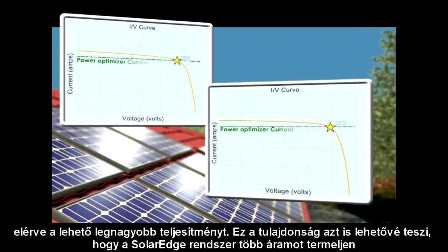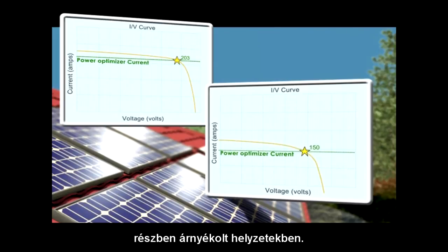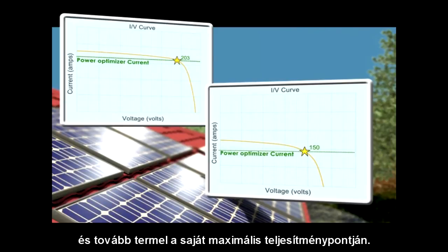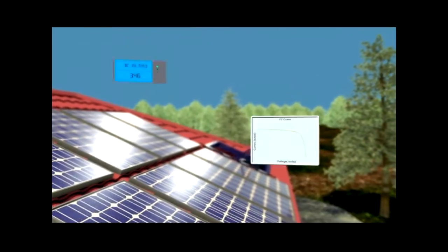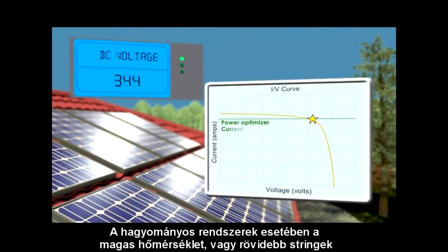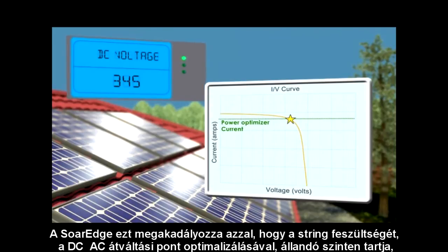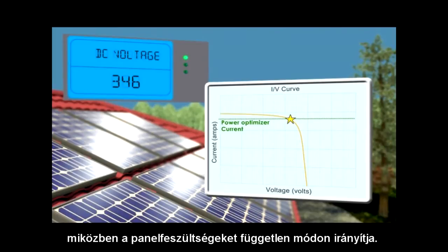This same capability also ensures the SolarEdge system will harvest more power in partial shading situations. The shaded panel produces as much as it can, while other panels in the string are not affected and continue to produce at their maximum peak point. In traditional systems, high temperature or shorter strings may lead to power losses due to string under-voltage. SolarEdge prevents it by maintaining string voltage fixed at the optimal DC to AC conversion point, while independently controlling the panel voltage.